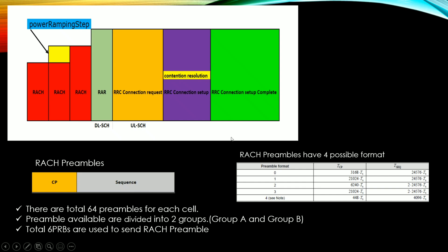Now we will go through one by one messages. First of all, there is a point that RACH preambles have a format which contains CP and the sequence number. RACH preambles have four possible formats - format 0, 1, 2, and 3. A table is provided with details. One of the major points to remember is that there are a total of 64 preambles for each cell.